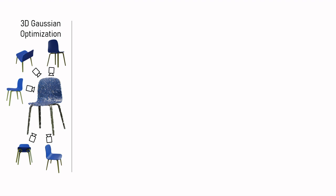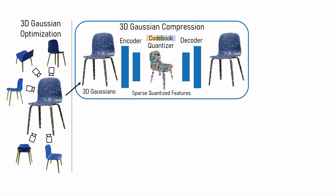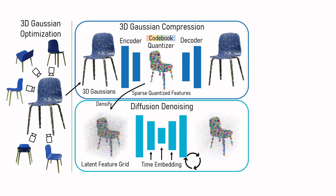Our method leverages the 3D Gaussian representation and learns a compression into a low dimensional sparse quantized feature space using sparse convolutions. A 3D Diffusion model is trained to denoise this latent space, which can be sparsified and decoded into high fidelity 3D Gaussians.